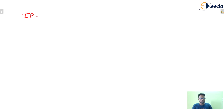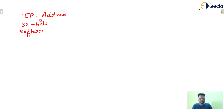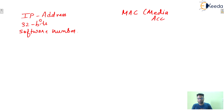Two kinds of addresses: first one is IP address, which is of 32 bits, and it is a software number. Next one is MAC address — Media Access Control — which is of 48 bits.